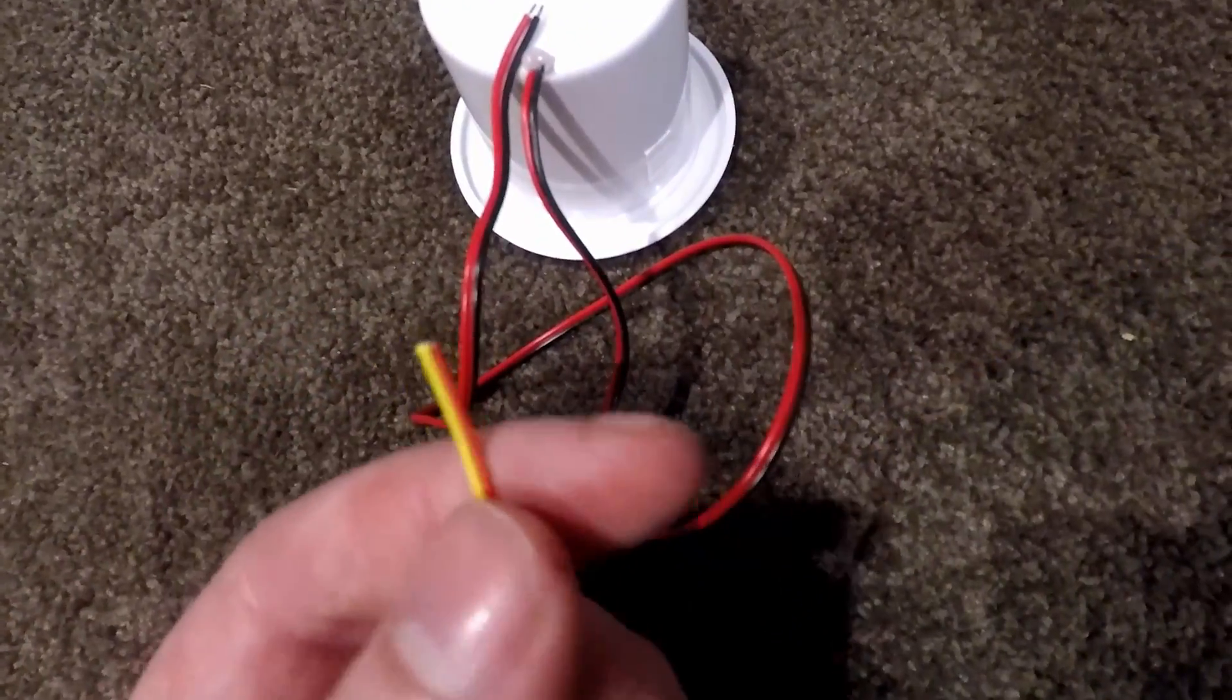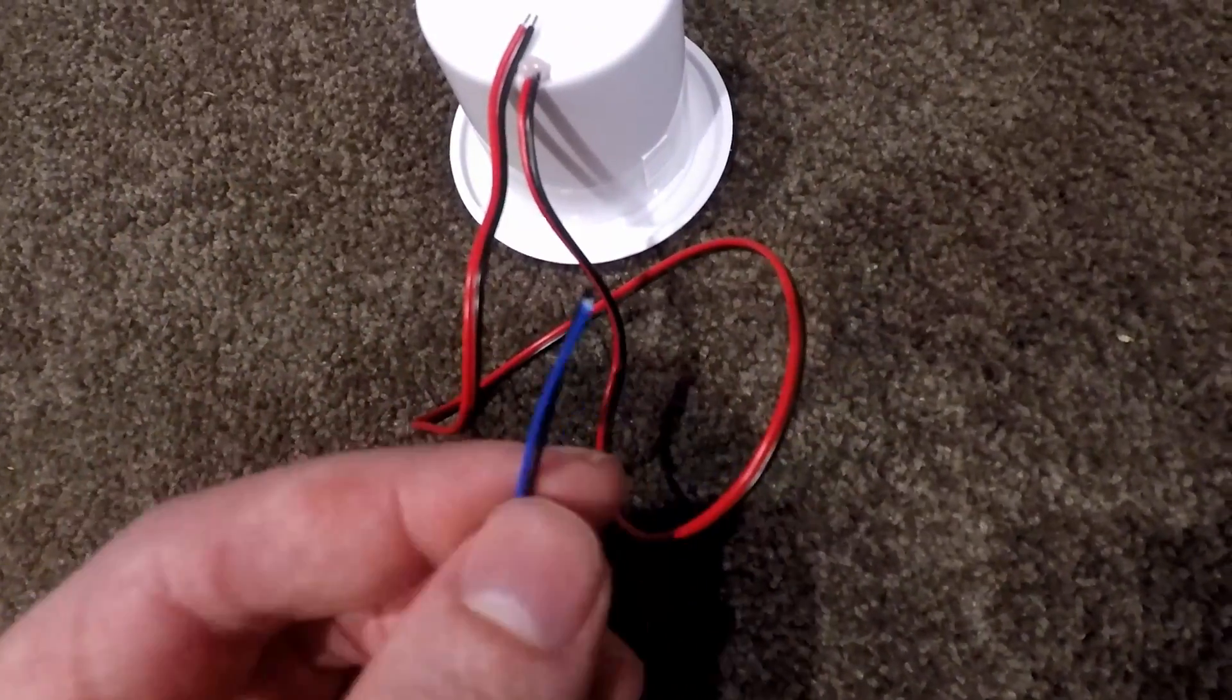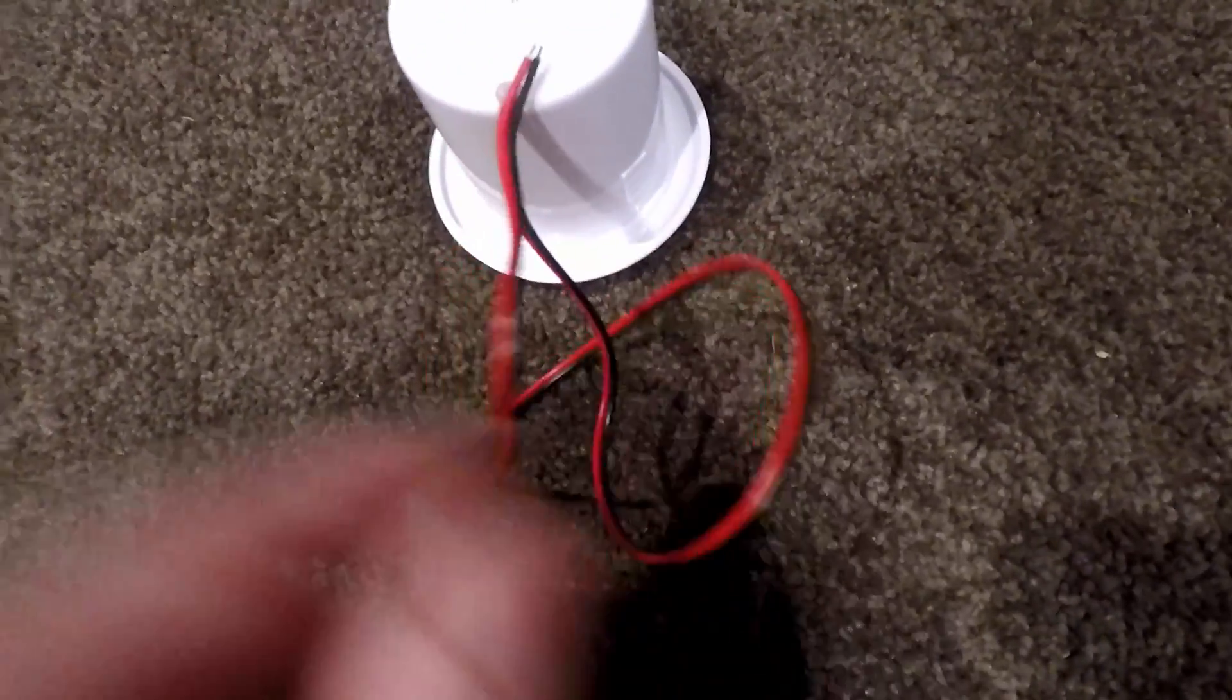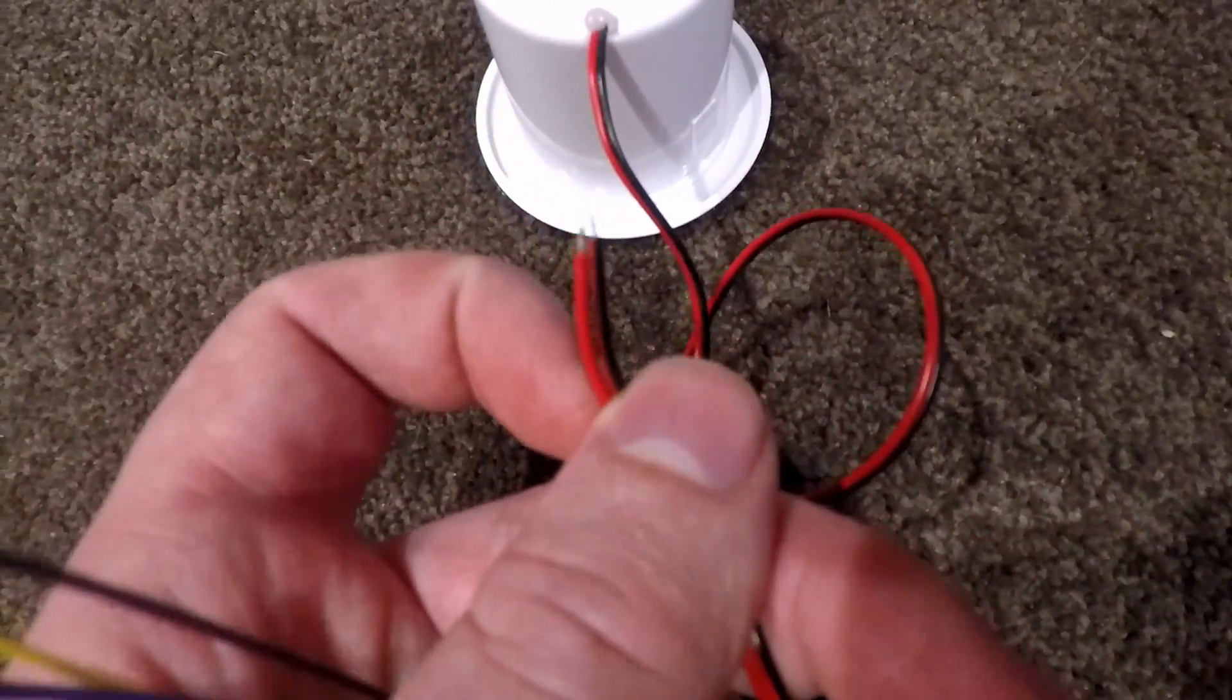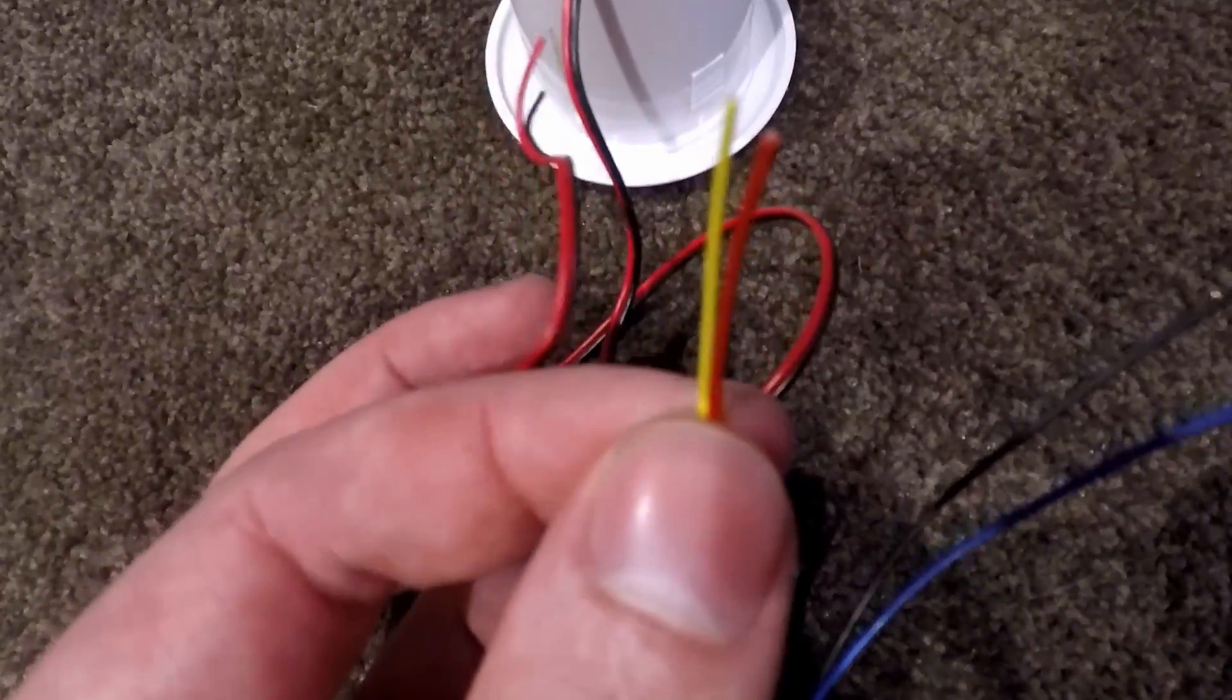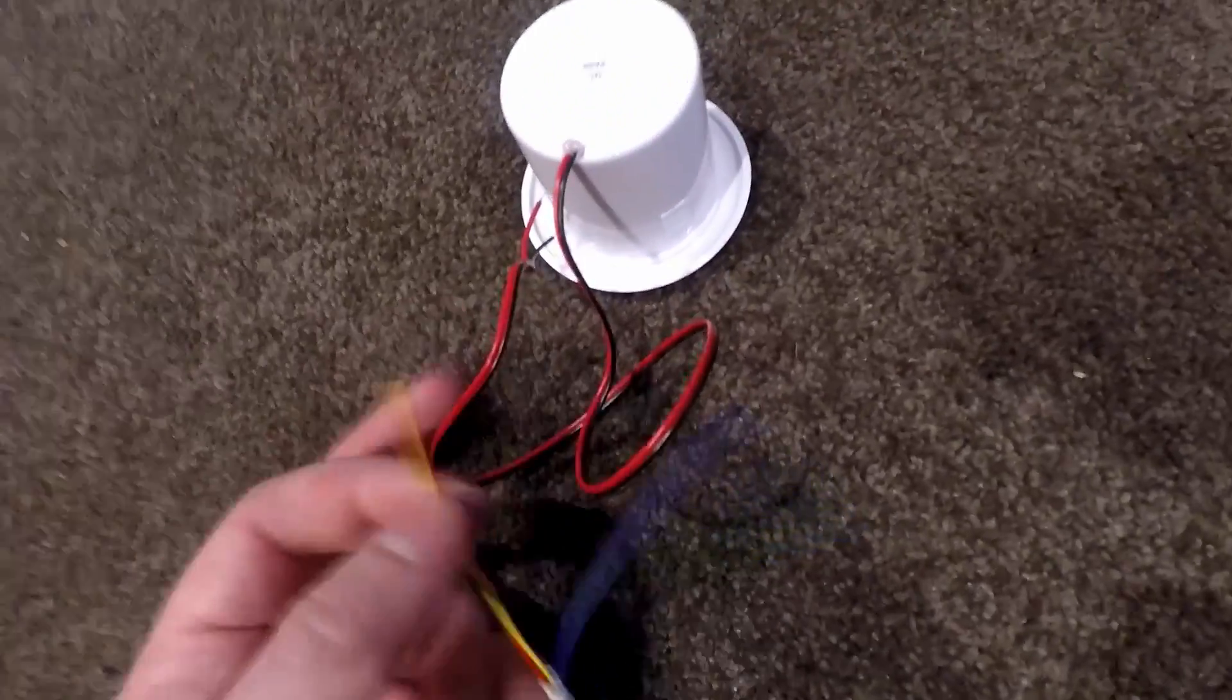So what we want to do is strip all the ends off and double them up for this one. So I'm going to have the black and the blue together and they're going to connect directly to the black end here, and then the red is going to go and connect up to both red and yellow on this end. So I'll quickly do that.